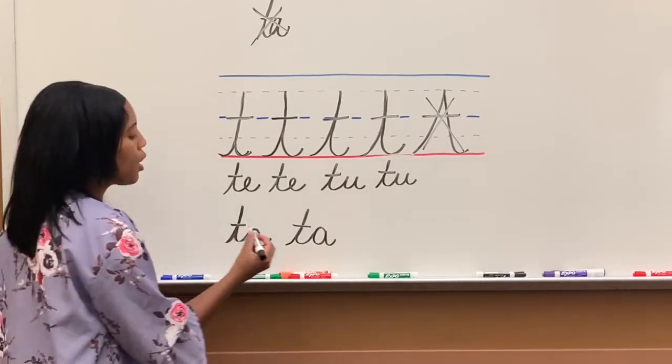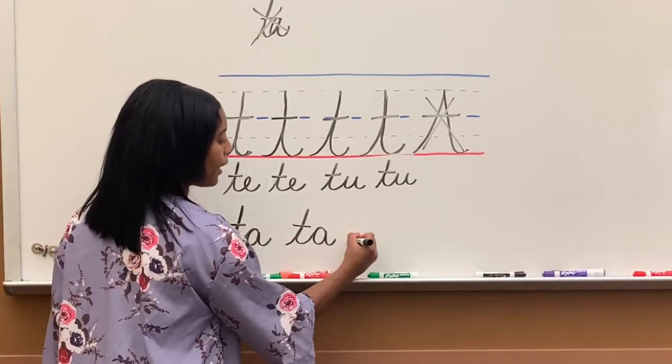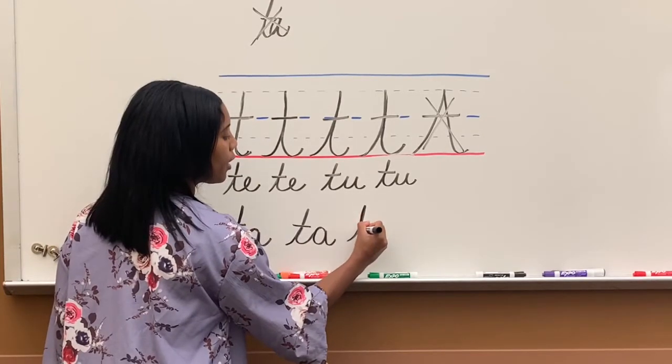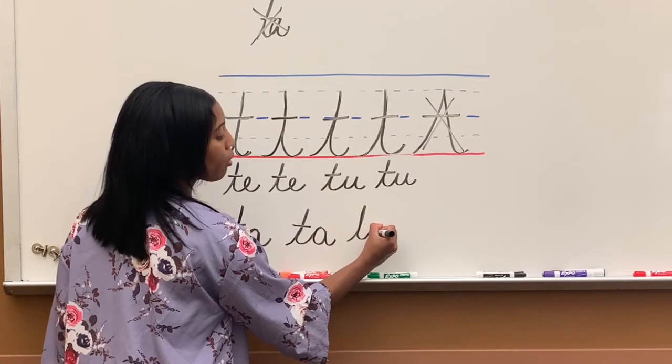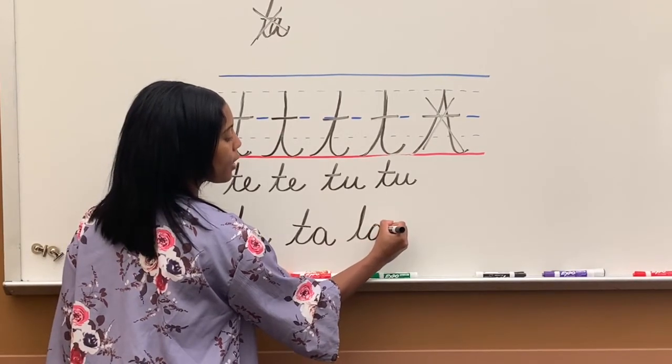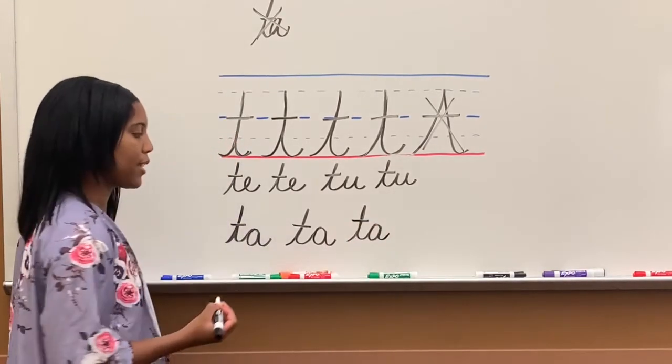You don't want it to be too close. So whenever I write T-A, again, I do T, I go halfway with the A, then I come back around to close it, down, kick it out, cross my T.